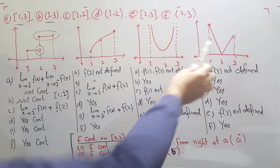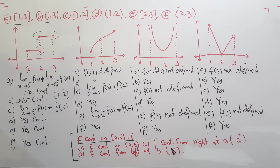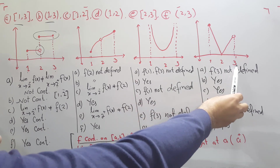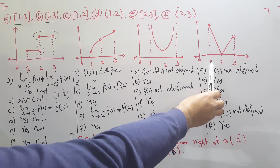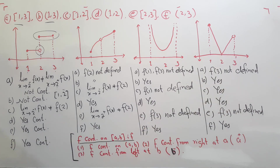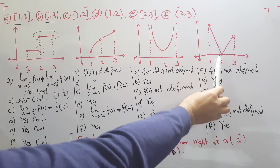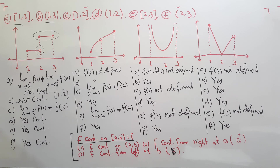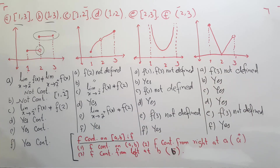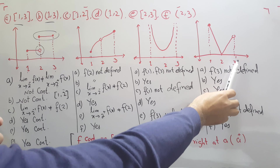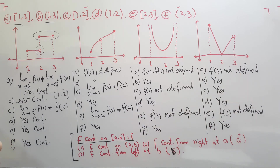The last graph shows that on the closed interval [1, 3], the function is not defined at 3, so it is not continuous. In the open interval (1, 3), since 1 and 3 are not included, the rest of the function is defined and thus continuous. In the closed interval [1, 2], the function is continuous. In the closed interval [2, 3], the function is not defined at 3, but in the open interval (2, 3), since 2 and 3 are not included, the function is continuous.